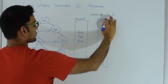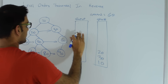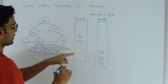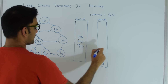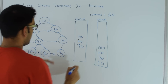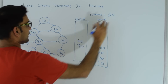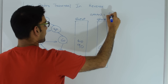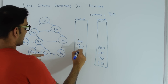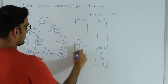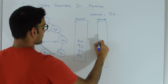Then I take out from the top of the queue, so current becomes 60. 60 does not have a right child but 60 does have a left child, 90, so that goes into the queue and 60 goes into the stack. Then I take out from the top of the queue, so current becomes 50. 50 has a right child, 80, and 50 has a left child, 70, and then I push 50 into the stack.